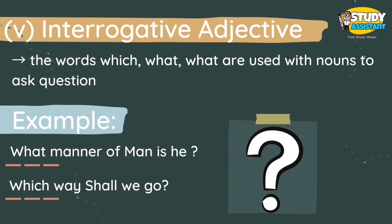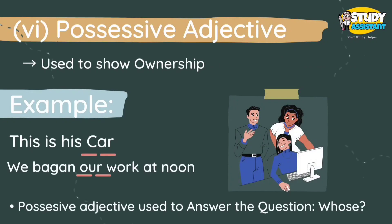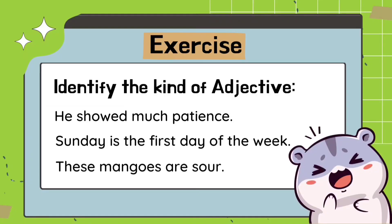For example, 'What manner of man is he?' and 'Which way shall we go?' The last type is possessive adjective. It is used to show ownership. For example, 'This is his goal' and 'We begin our work at school.' Possessive adjective answers the question 'whose?' or 'to whom?'